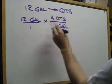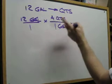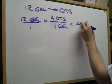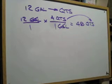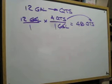We know that there are 4 quarts to 1 gallon. Put that over 1, cancel our gallons. 12 times 4 is 48, and that ends up being our ending there, 48 quarts. That's all there is to that.